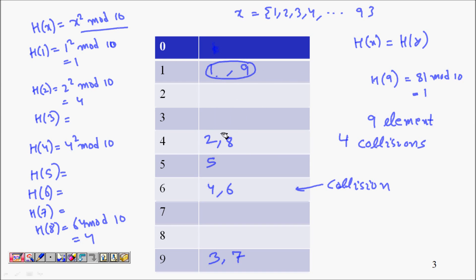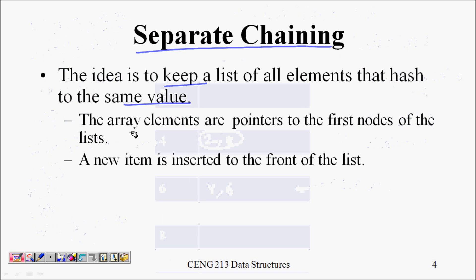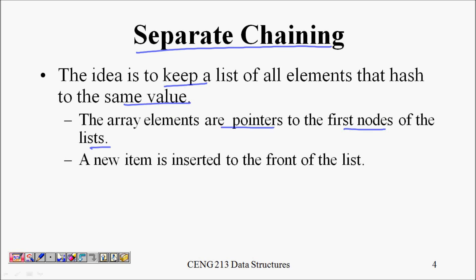For example, cell 4 will maintain a pointer to a linked list containing all elements that hash to that cell. So the array elements are pointers to the first node of their respective linked lists.